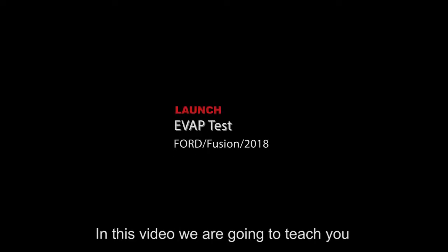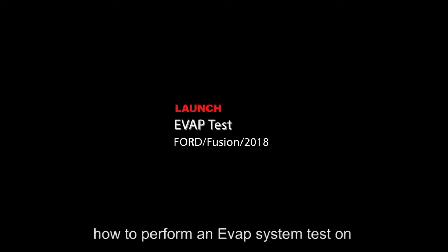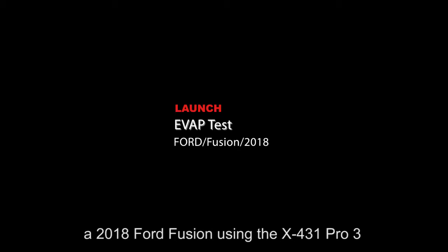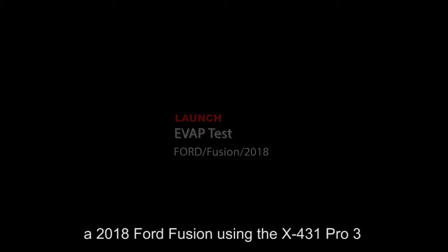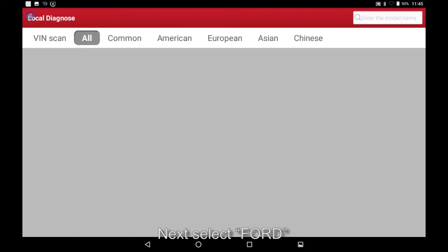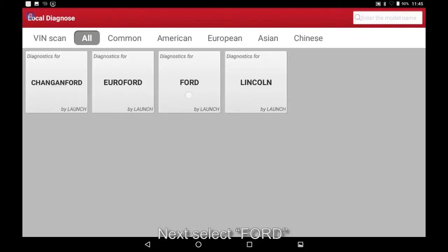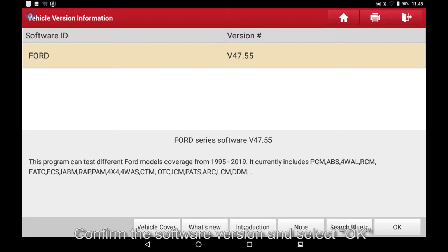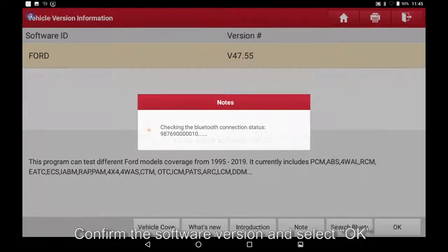In this video we are going to teach you how to perform an EVAP system test on a 2018 Ford Fusion using the X431 Pro 3. First, select Local Diagnose, next select Ford, confirm the software version and select OK.